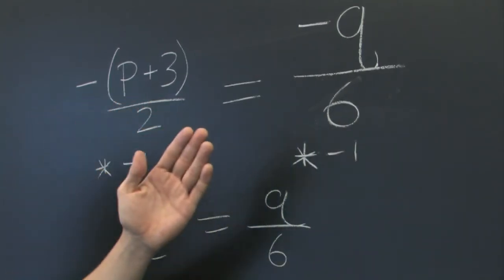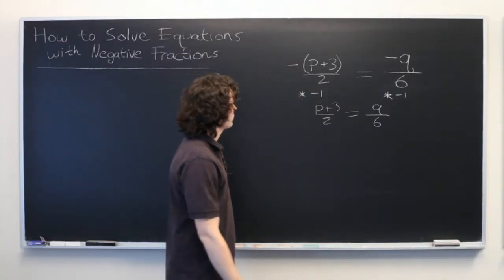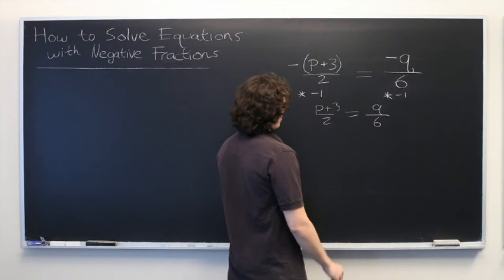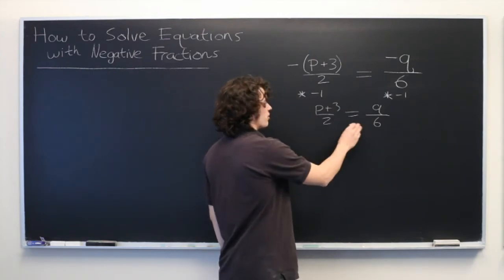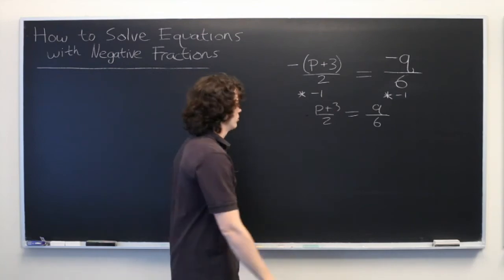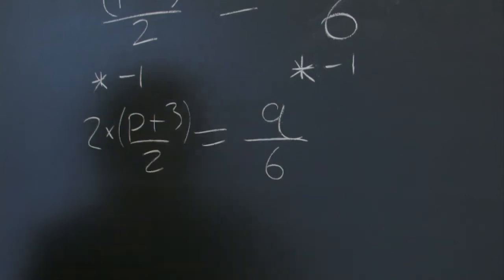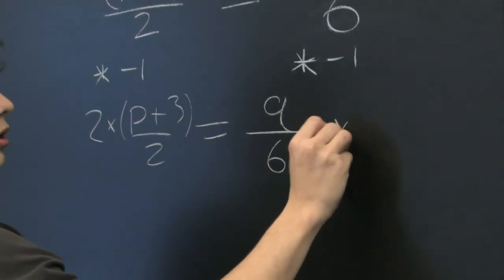You can cancel negative signs as long as you do it on both sides of the equation at the same time. So next, let's multiply both sides of the equation by 2 so that the left hand side is no longer a fraction. Multiply by 2 here and multiply by 2 here.